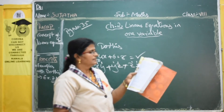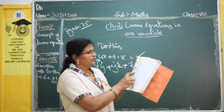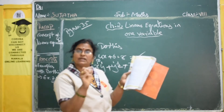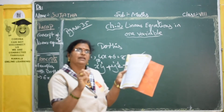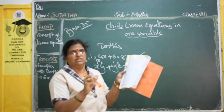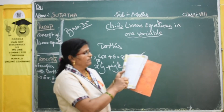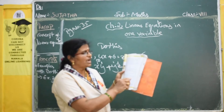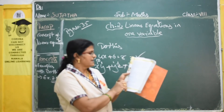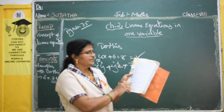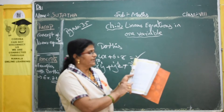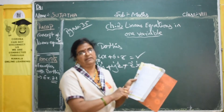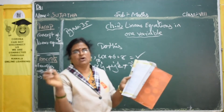Fifth one: power is 1, but there are two variables — it is linear but a two-variable equation. Write that down. Sixth one also has two variables. Seventh one has three variables — it is a linear equation but with three variables. Write that as well.